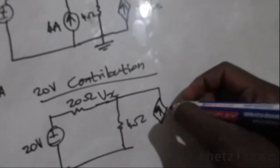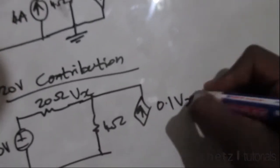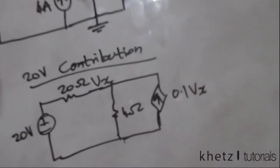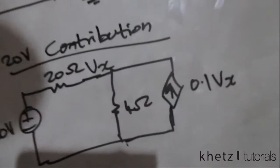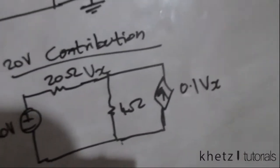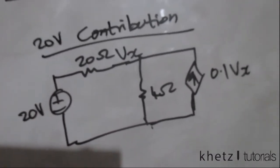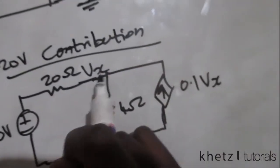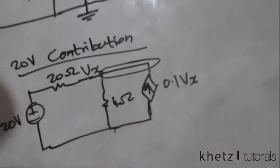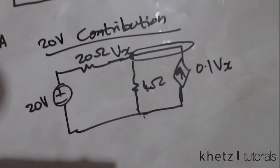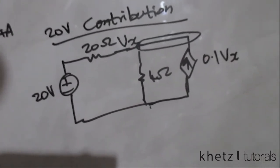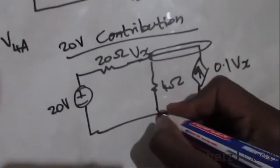For superposition, the dependent source stays intact — we do not remove it because it is a dependent source, not an independent source. Vx is labeled as the node voltage, and all of that is one node, so we are going to use nodal analysis, which you are probably familiar with at this point.